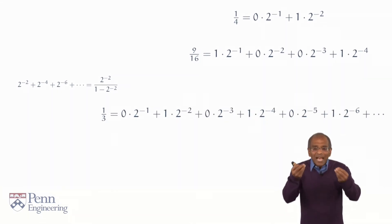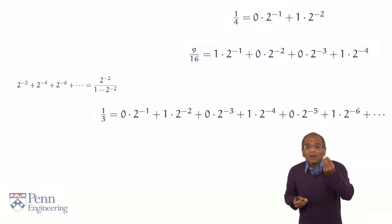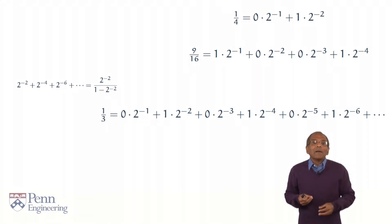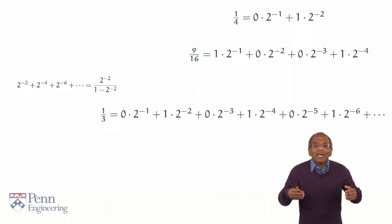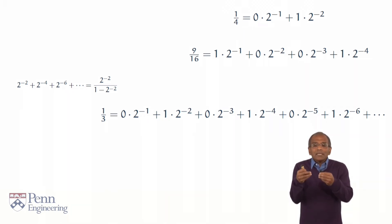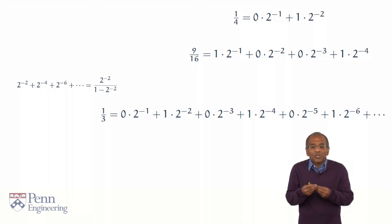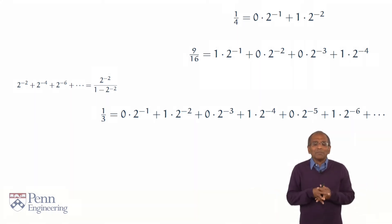One third is exactly, via the geometric series, one quarter plus one sixteenth plus one sixty-fourth plus dot dot dot, ad infinitum. In other words, one third is obtained by summing negative powers of even powers of two, with no contribution from reciprocal odd powers of two. Here's an infinite expansion in negative powers of two for yet another number.